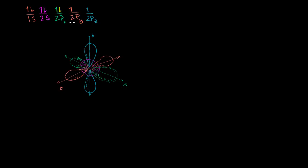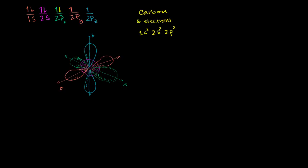This is just a little bit of review with a little bit of visualization. Now given what we just reviewed, let's think about what's happening with carbon. Carbon has 6 electrons. Its electron configuration is 1s2 — two electrons in the 1s orbital — then 2s2, then 2p2. It only has two left because it has a total of 6 electrons: two go in 1s, two in 2s, then two are left to fill the p orbitals.